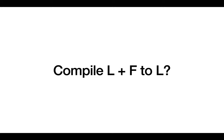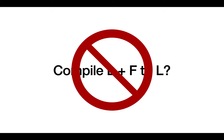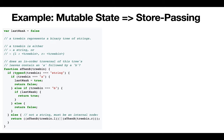What about a definition that says we can compile language L with feature F down to just language L? If I have a language with while loops and add for loops, for loops must not be an expressive addition because I can compile them down to the language with only while loops. We're getting closer, but this still doesn't quite capture things.